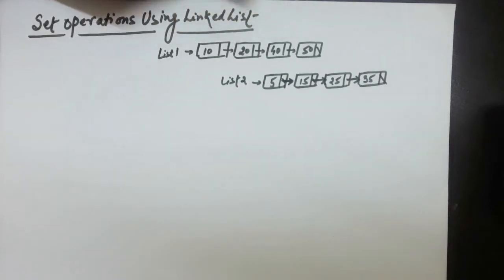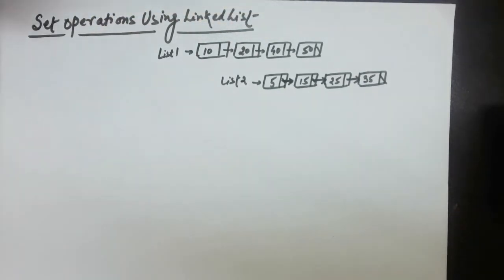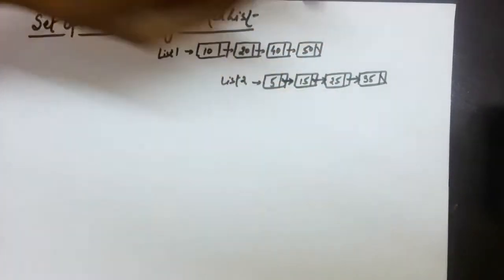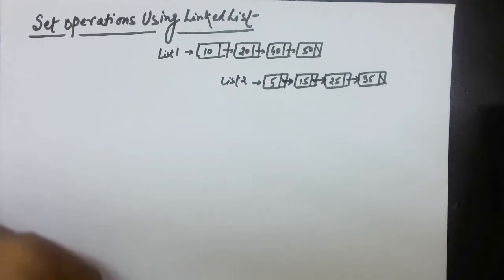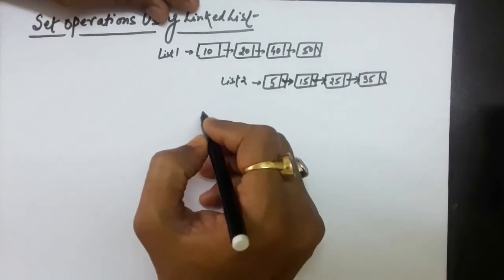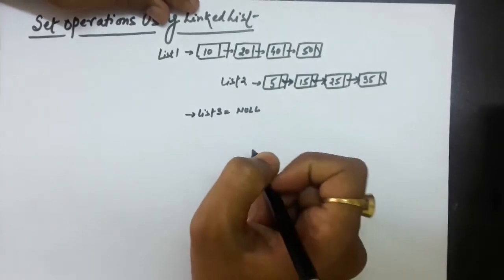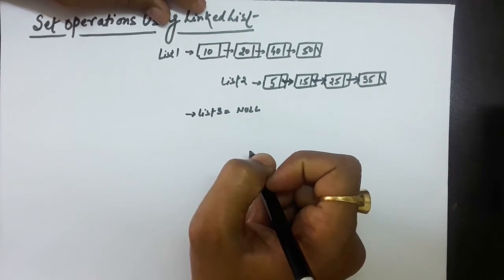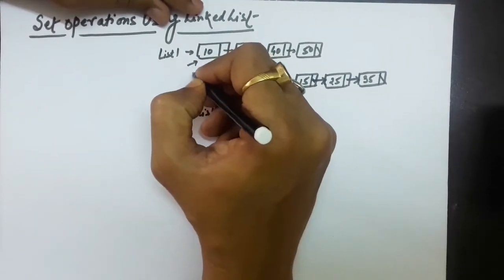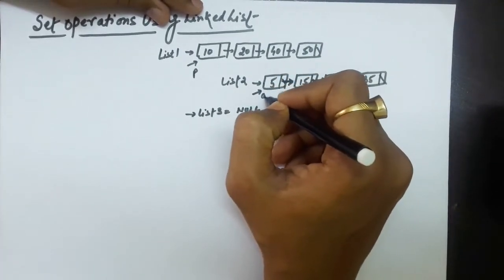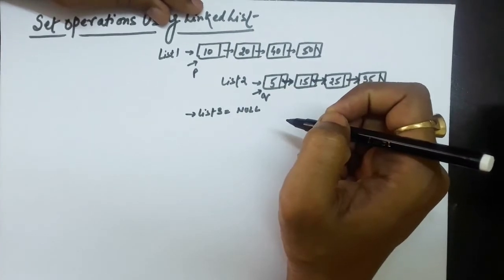For example, let's say two linked lists are given. In the first linked list, the items are arranged in ascending sequence: 10, 20, 40, 50. And in list two also, the items are arranged in ascending sequence: 5, 15, 25, and 35. We have to merge these two linked lists to form a single linked list in ascending sequence. For this, let's say we have another linked list, list 3, which is initially null. We will take a p pointer at the first node of the first linked list and a q pointer at the first node of the second linked list.